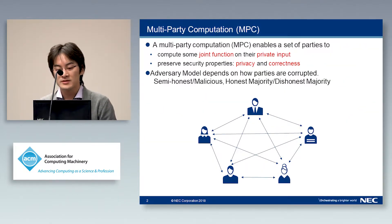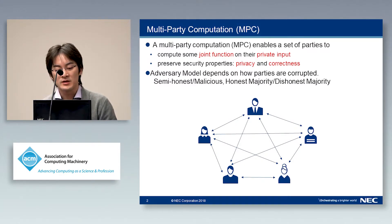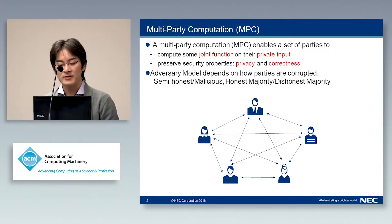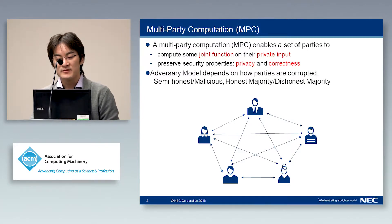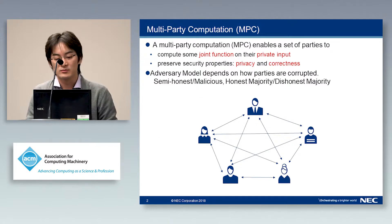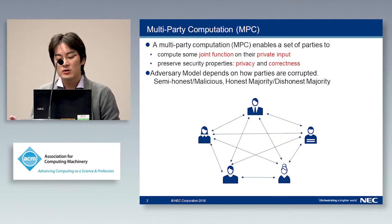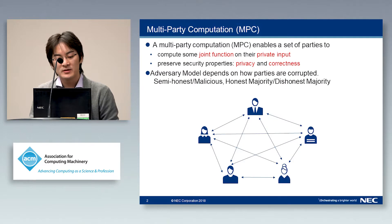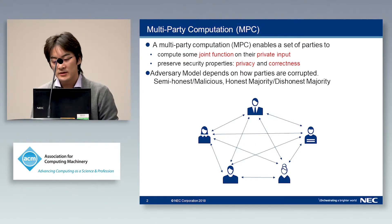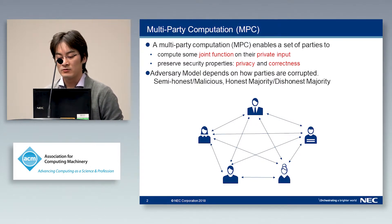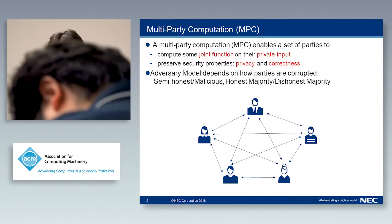Multi-party computation, so-called MPC, enables a set of parties to compute some joint function on their private inputs while preserving security properties like privacy and correctness and more. In the threat model, some parties may be corrupted, so the adversary model depends on how parties are corrupted, such as semi-honest or malicious adversary, and honest majority or dishonest majority settings.